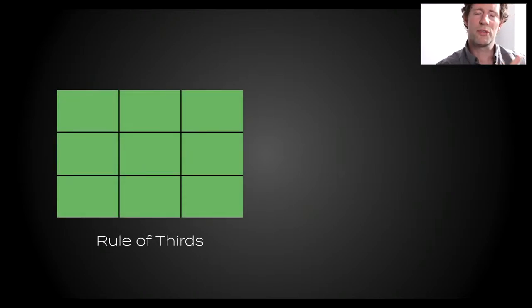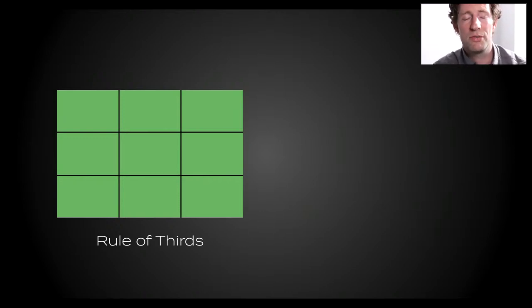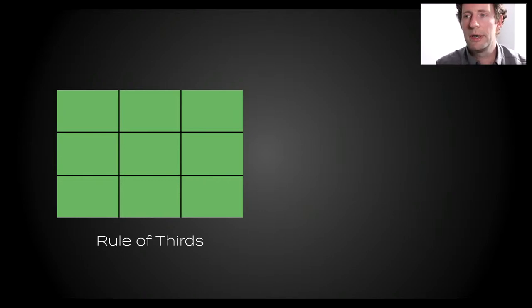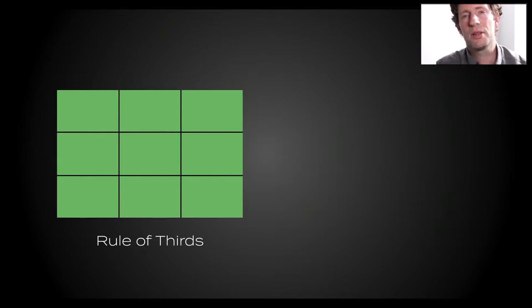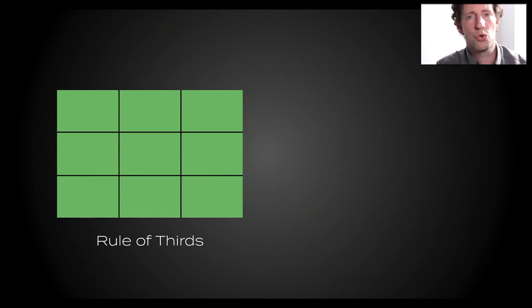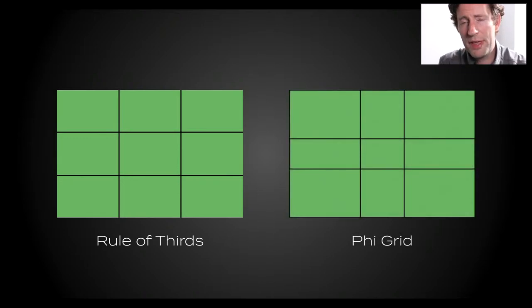The rule of thirds is the most well-known visual guideline. It's a grid where you break your scene into nine rectangles — three vertically and three horizontally. The places where those lines intersect are what you might call sweet spots or cardinal points, because those positions within the frame have more weight, more dominance. Our eyes are naturally drawn to them.